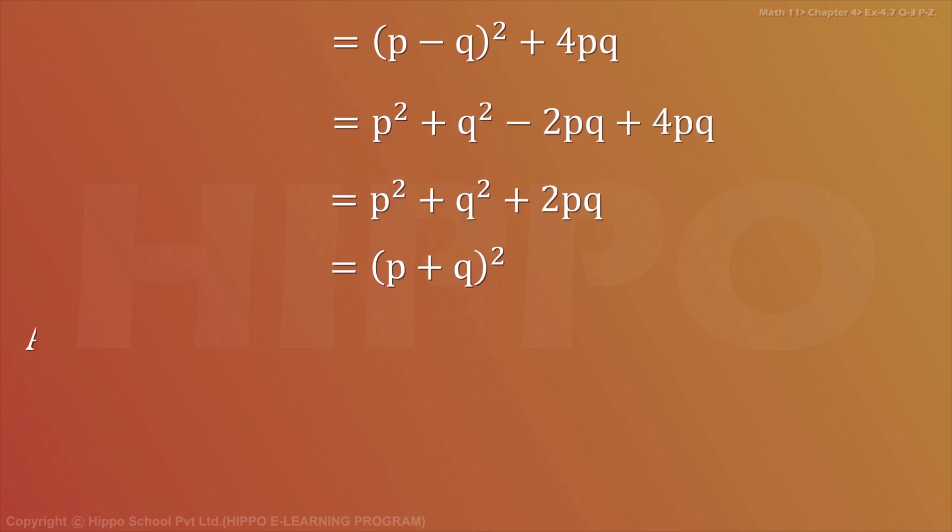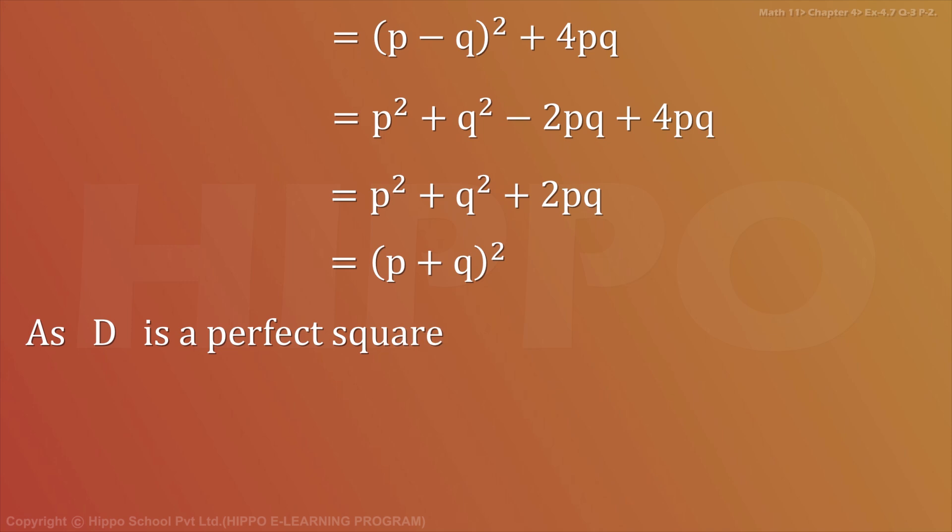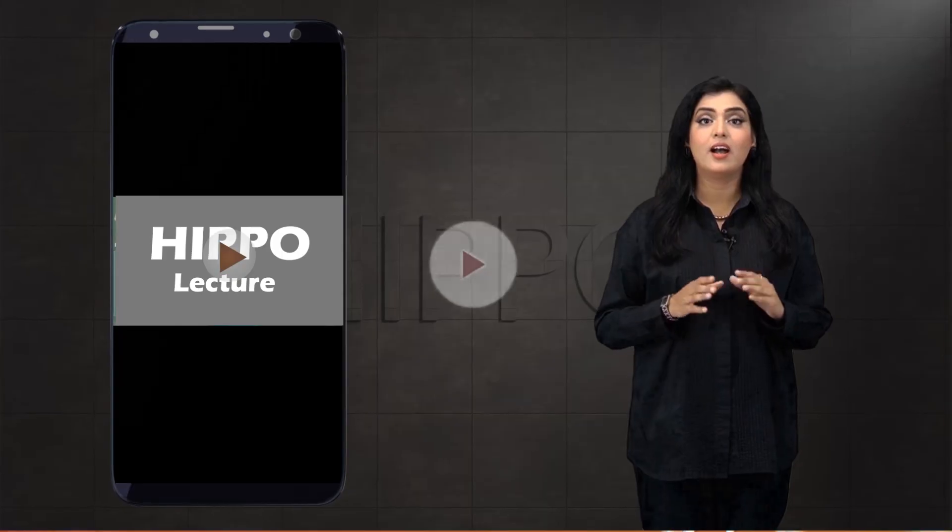As D is a perfect square in the form of the discriminant, this means the roots are rational.